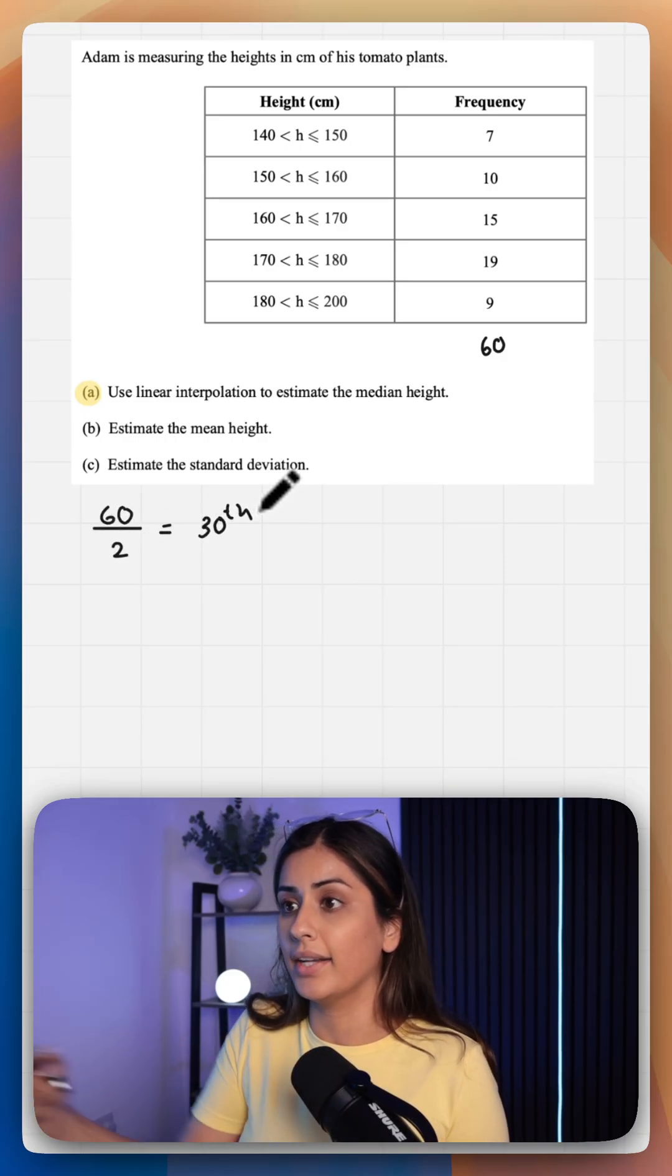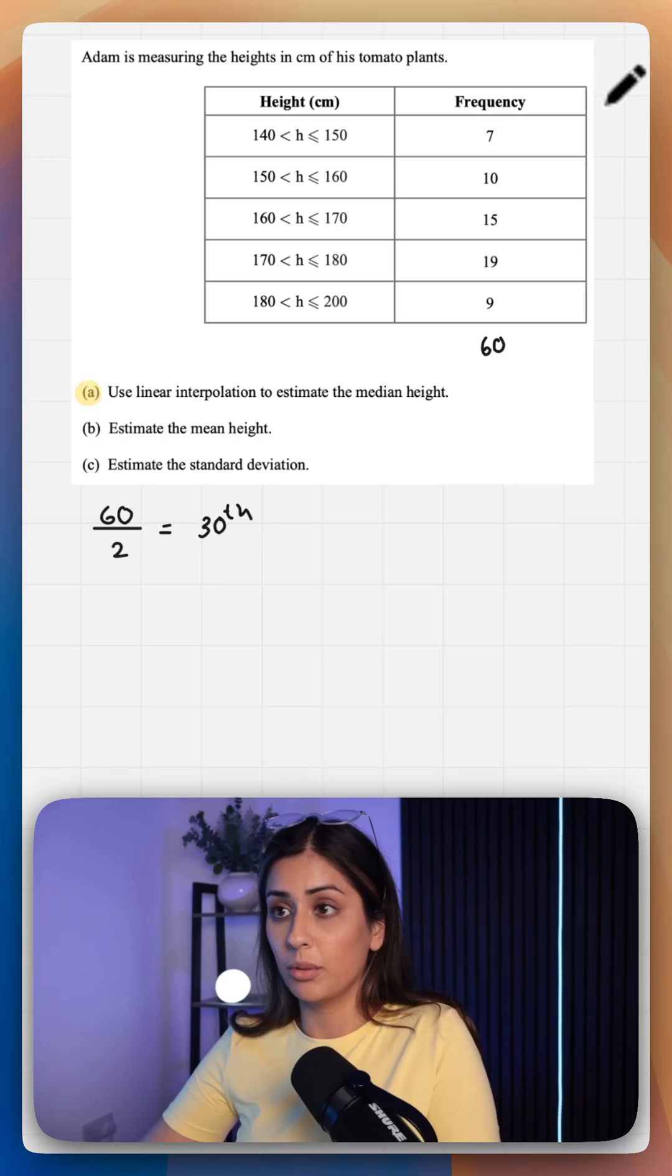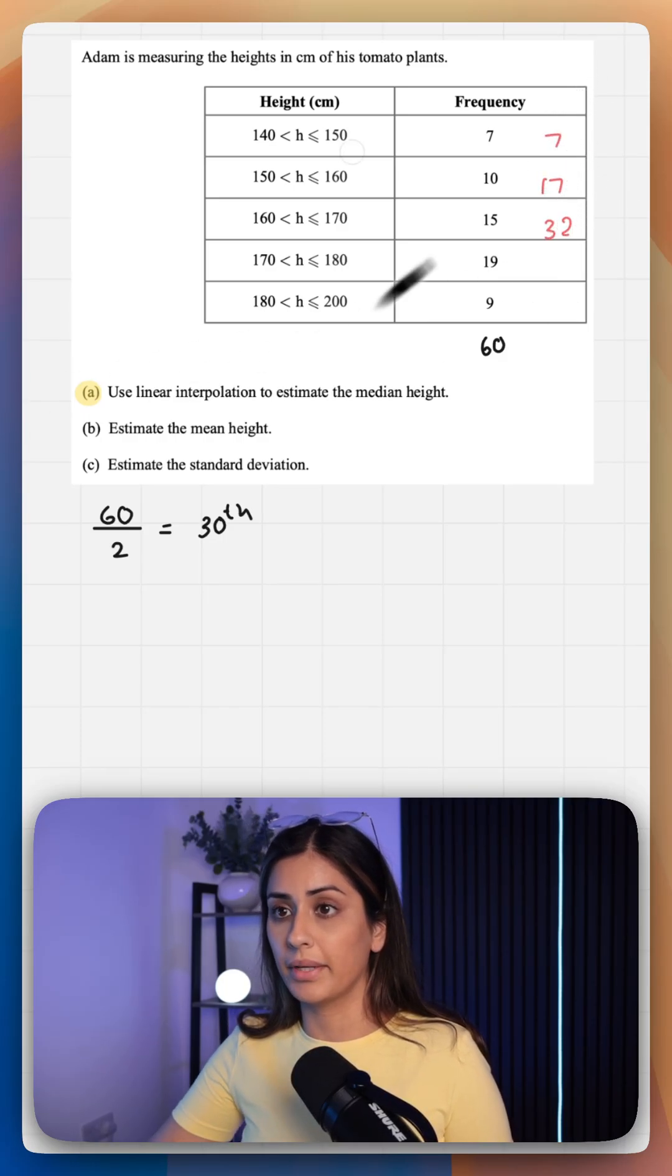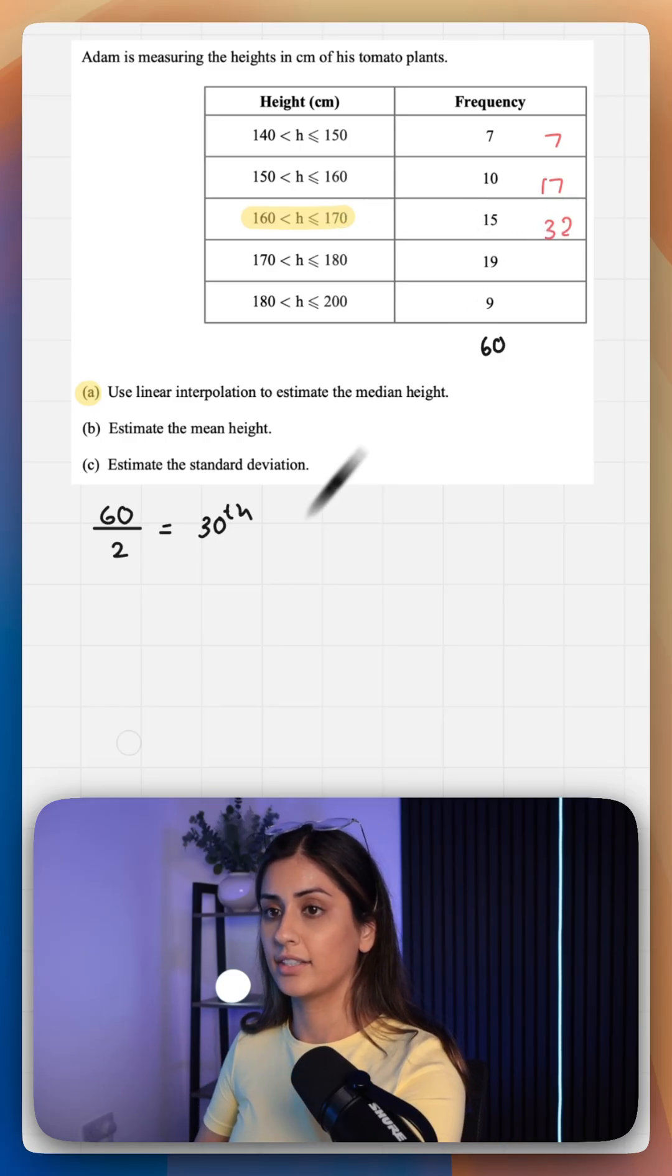We need to know firstly where does that sit. So let's work out our cumulative frequency. That's 7, 17 and 32. We don't need to carry on because our median sits in that category there.